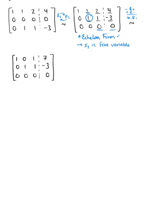We have attained row-reduced echelon form! We can rewrite this in equivalent equation form: the first row reads as x1 + x3 = 7, and the second row reads as x2 + x3 = -3. Now we can use this to write our general solution.